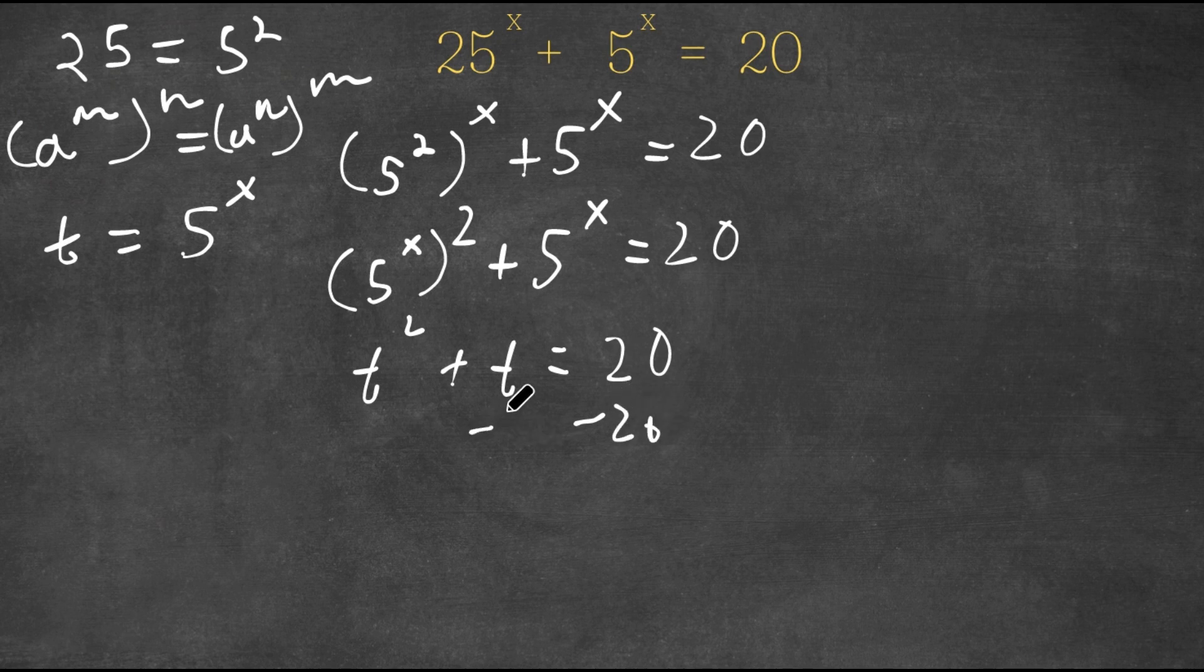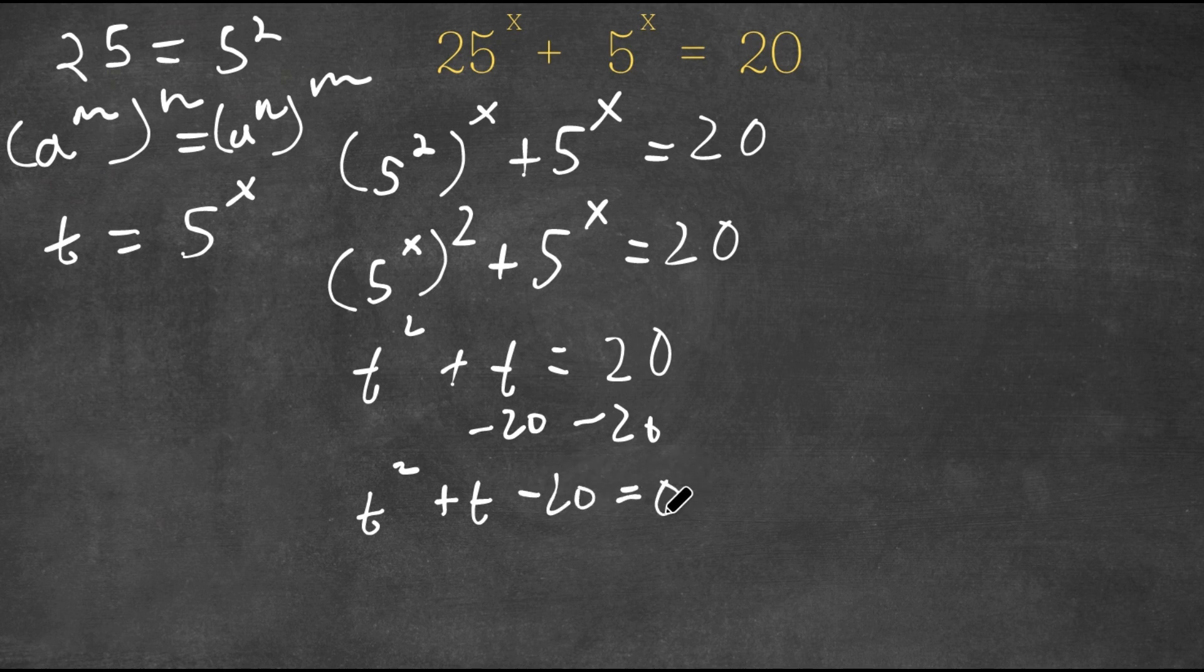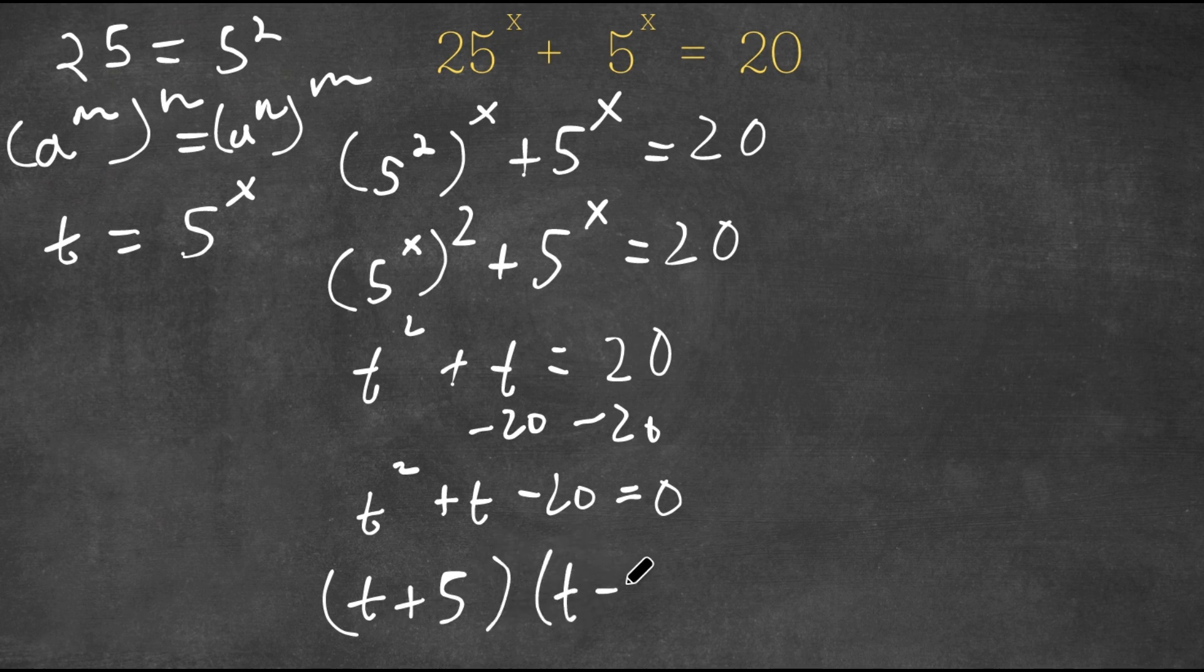Now I'm going to subtract 20 on both sides. So now I get t squared plus t minus 20 is equal to 0. Now this is a simple quadratic equation and this will be factored into t plus 5 times t minus 4.